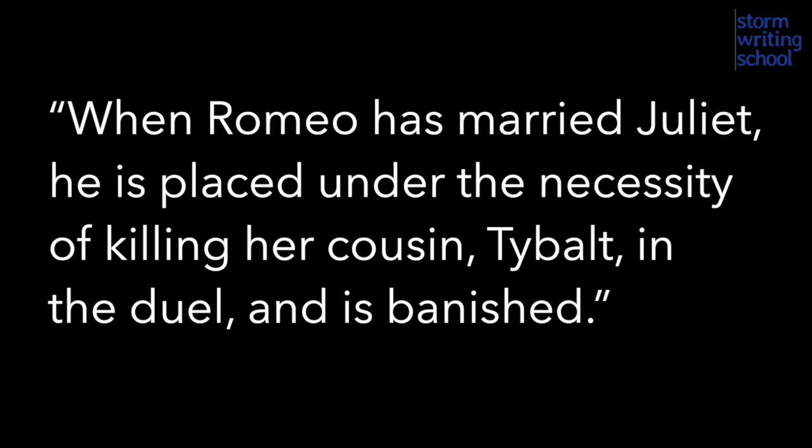And Freytag's example is: when Romeo has married Juliet, he is placed under the necessity of killing her cousin Tybalt in the duel, and is banished. That tragic force brings about the falling action that leads to the climactic catastrophe of the story, which happens when the two star-crossed lovers end up killing themselves. Spoiler alert. That tragic force, by the way, occurs in Act 3, Scene 1, which is the twelfth scene of the play.